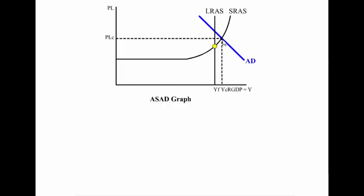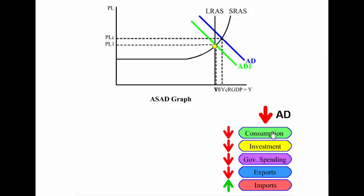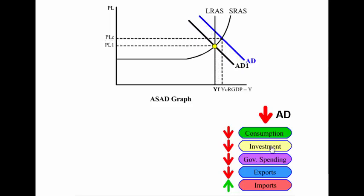Let's say the economy is beyond full employment. If there's a decrease in consumption, this will shift aggregate demand to the left, driving the price level down and real GDP and national income down. If there's a decrease in investment, this also shifts aggregate demand to the left, driving the price level down and real GDP and national income down.